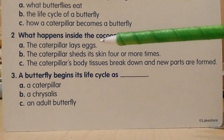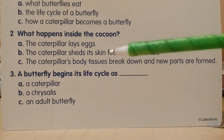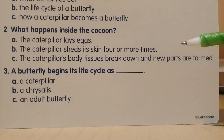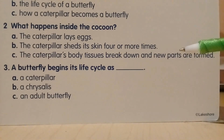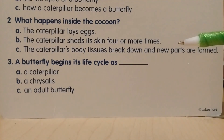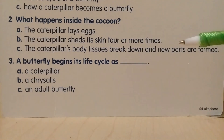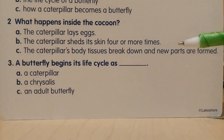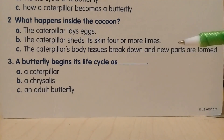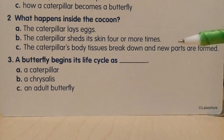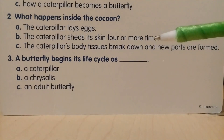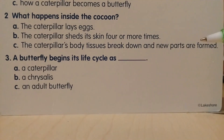Number two: what happens inside the cocoon? A — the caterpillar lays eggs; B — the caterpillar sheds its skin four or more times; C — the caterpillar's body tissues break down and new parts are formed. To answer a question like this I recommend you go back to the text. Pause the video, go back and have a read, then come back. The answer is C — the caterpillar's body tissues break down and new parts are formed.